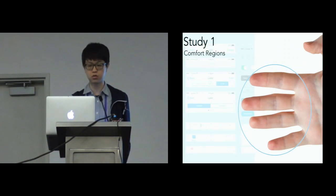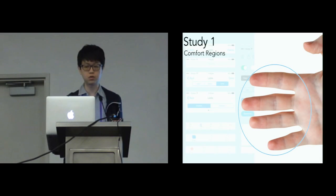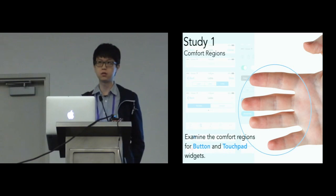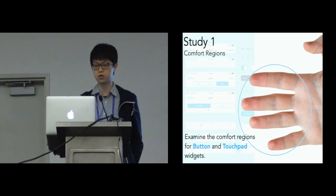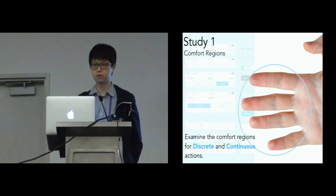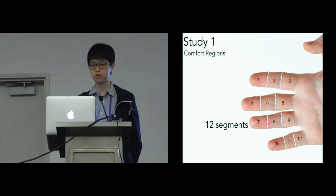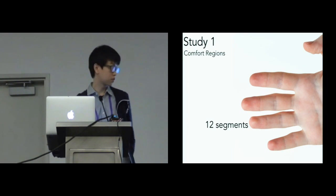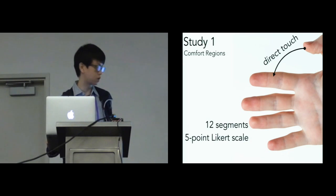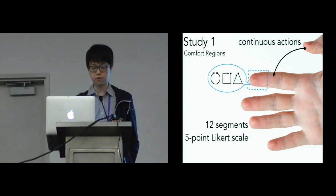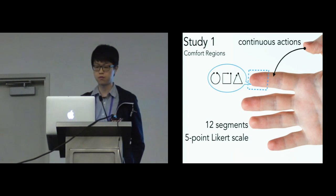The first question leads us to Study 1: comfort regions. In this study, we examine comfort regions for button and touchpad widgets, since these two kinds represent discrete and continuous thumb-to-finger actions. We segment fingers into 12 segments and ask participants to perform direct touch and continuous actions on each segment. Participants report their physical comfort using a five-point Likert scale.